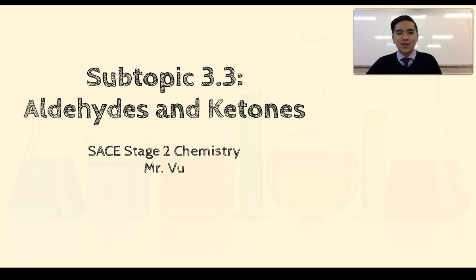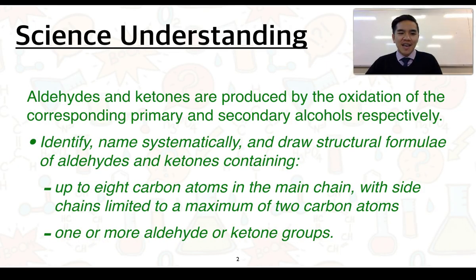In this video we're going to cover subtopic 3.3 on aldehydes and ketones. Our first science understanding is that aldehydes and ketones are produced by the oxidation of the corresponding primary and secondary alcohols respectively. We'll need to know how to identify, name systematically, and draw structural formulas of aldehydes and ketones containing up to 8 carbon atoms in the main chain, with side chains limited to a maximum of 2 carbon atoms, as well as one or more aldehyde or ketone groups.